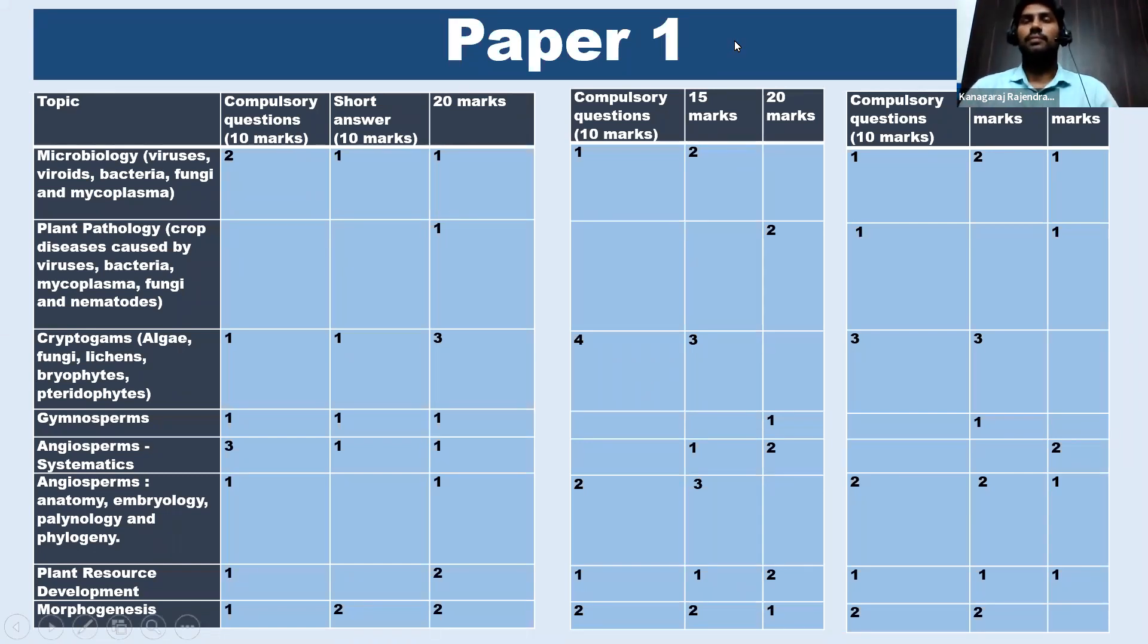So first, we discuss one by one, paper one, paper two. So in paper one, you know, there are two sections, section A and section B. And these are the topics, major subjects in paper one: microbiology, plant pathology, cryptogams, gymnosperms. Again, in the angiosperms, I divided the topic into two: systematics and anatomy and embryology. So the systematics topic covers taxonomy, taxonomy area, then plant resource development, and finally morphogenesis. So these are the last three years question paper, the question trend. 2021, 2020, and 2019. So if you look at the question pattern,